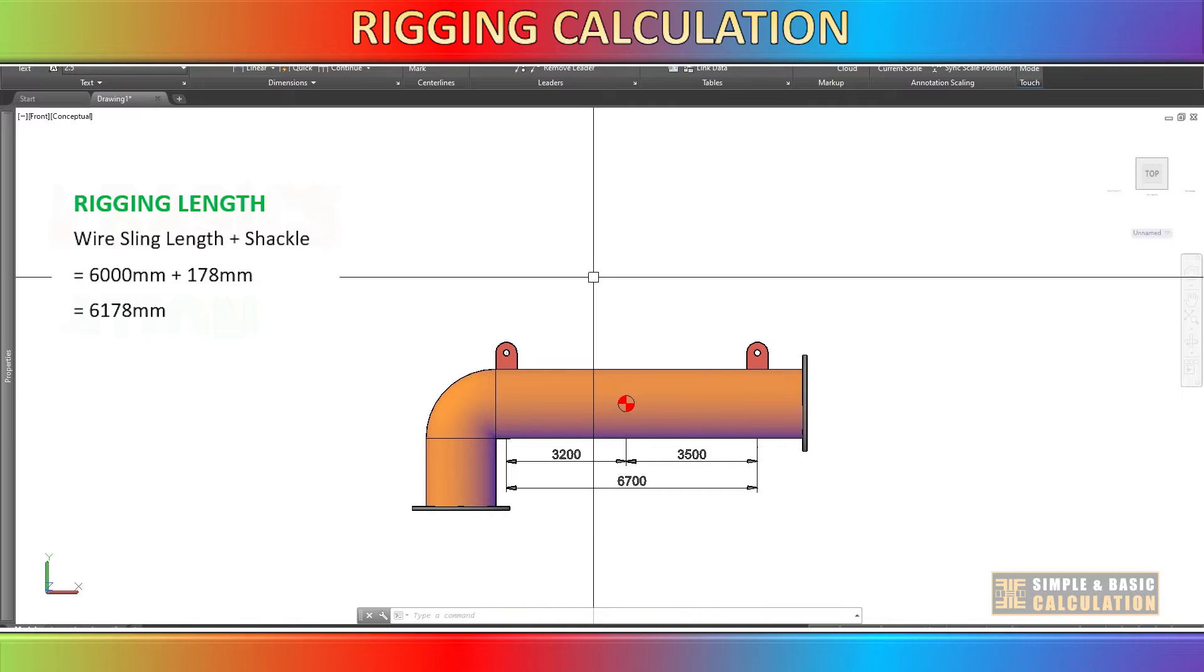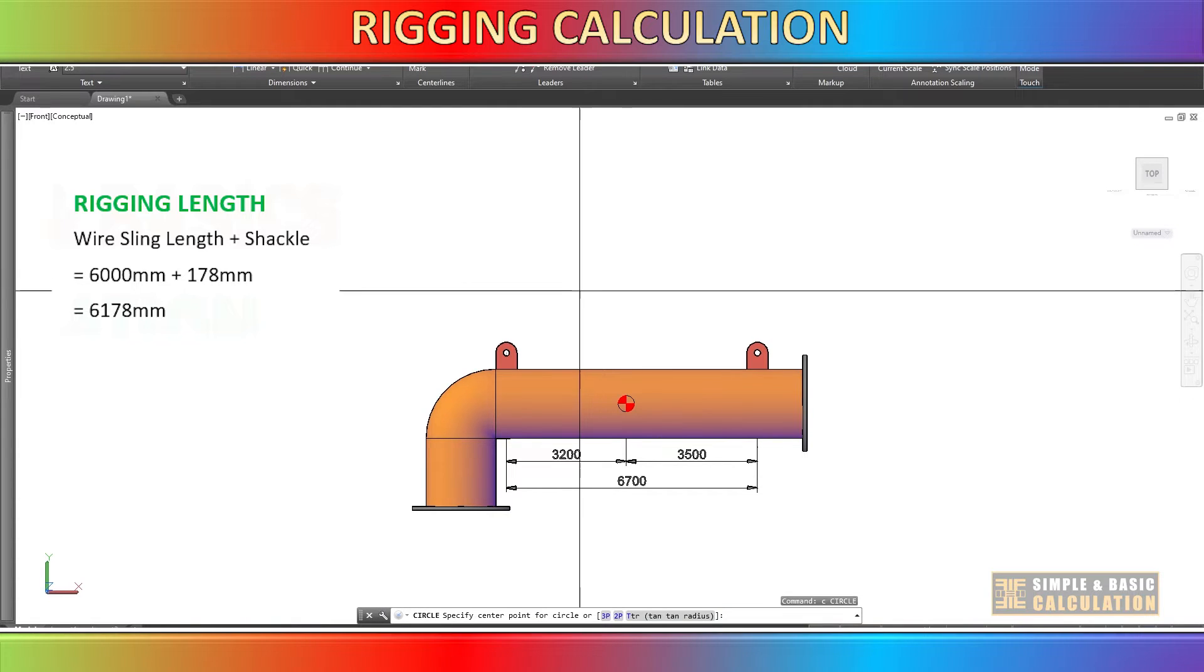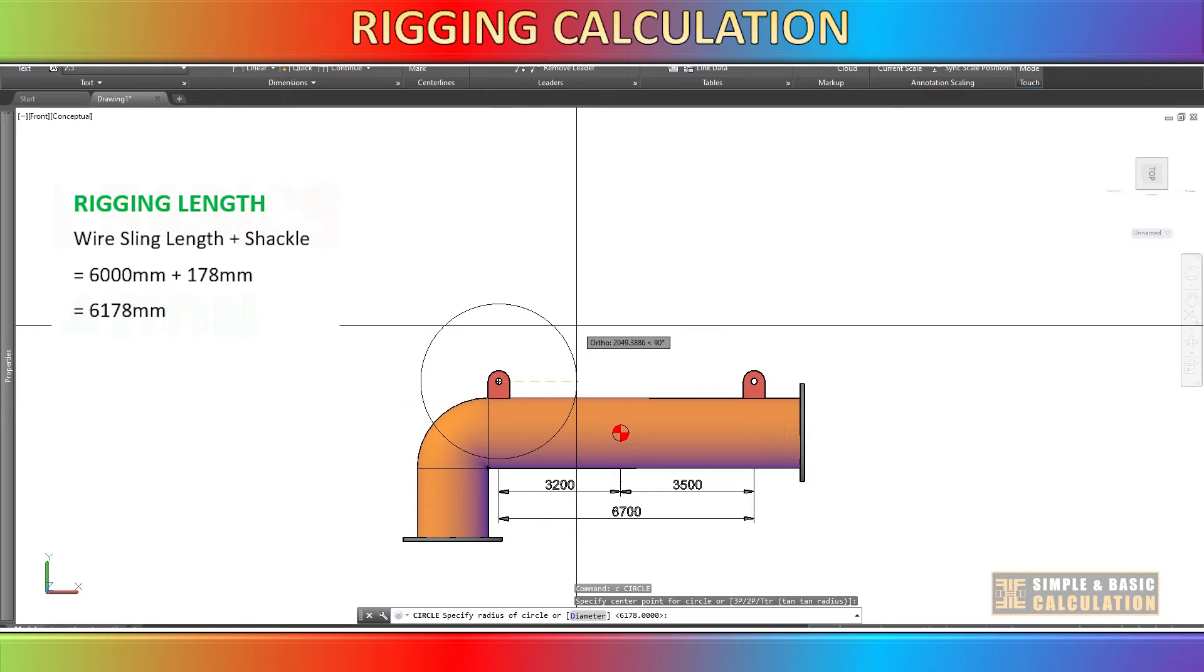Let's assume that you plan to use the same length of rigging in both lifting points. Using AutoCAD, you can see the result if you use the same length of rigging when the center of gravity is not in the center.